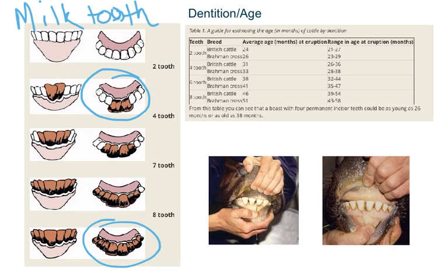Dentition depends entirely on the breed. British breed cattle and crosses usually erupt their teeth faster than Brahman crosses — the average age for a first two-tooth is about 24 months for a British breed and 26 months for a Brahman cross. Nutrition also plays a role: an animal on a poor plane of nutrition will erupt its teeth later than one on an even nutritional plane. This is why ossification is used to check the actual age of the carcass when teeth aren't always accurate.